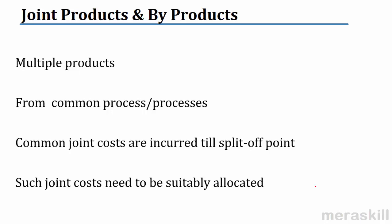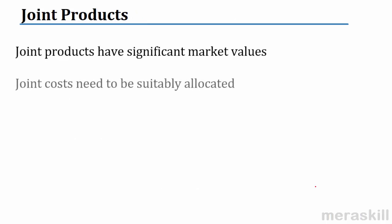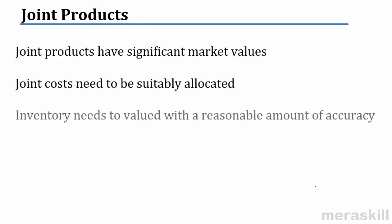Common process, you get two or more products. They may be joint products or by-products. What is the small difference, we will just discuss. Now the common joint costs which are incurred till the split-off point, those have to be suitably allocated. Joint products have significant market values and joint costs need to be suitably allocated.